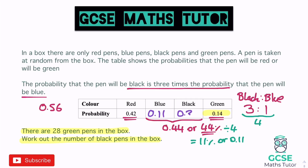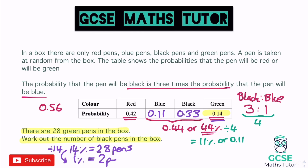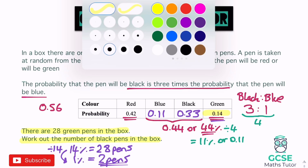Blue is one part: 0.11. Black is three parts: 3 × 0.11 = 0.33. The table is now complete. Green is 0.14, and there are 28 green pens, so 14% = 28 pens. Dividing both sides by 14: 1% = 2 pens.